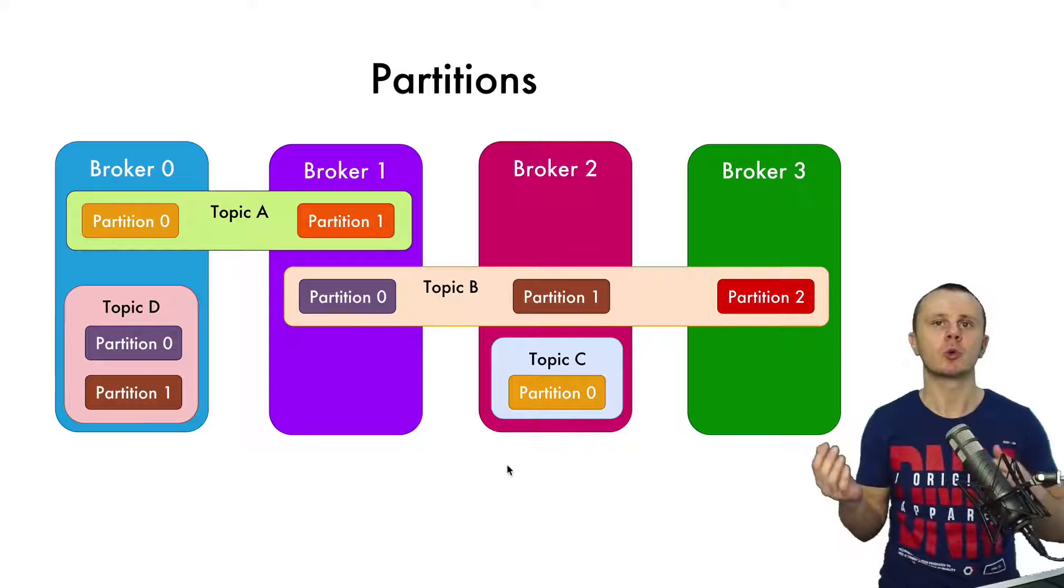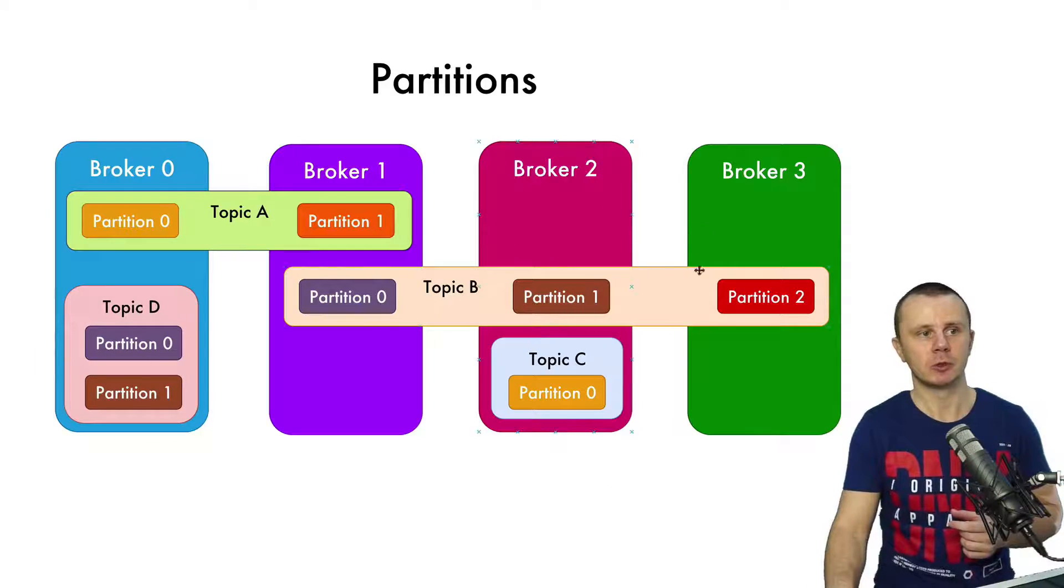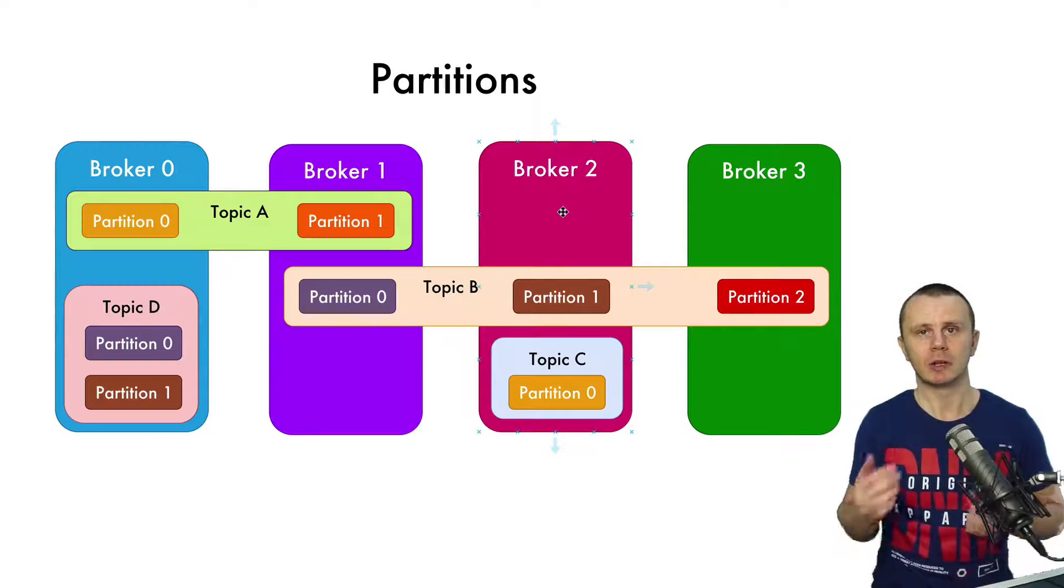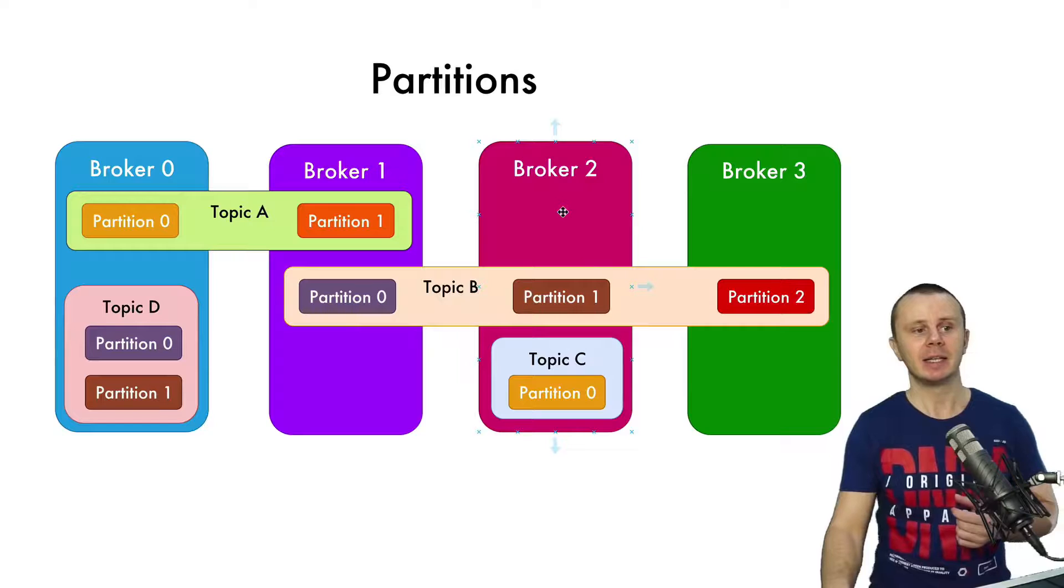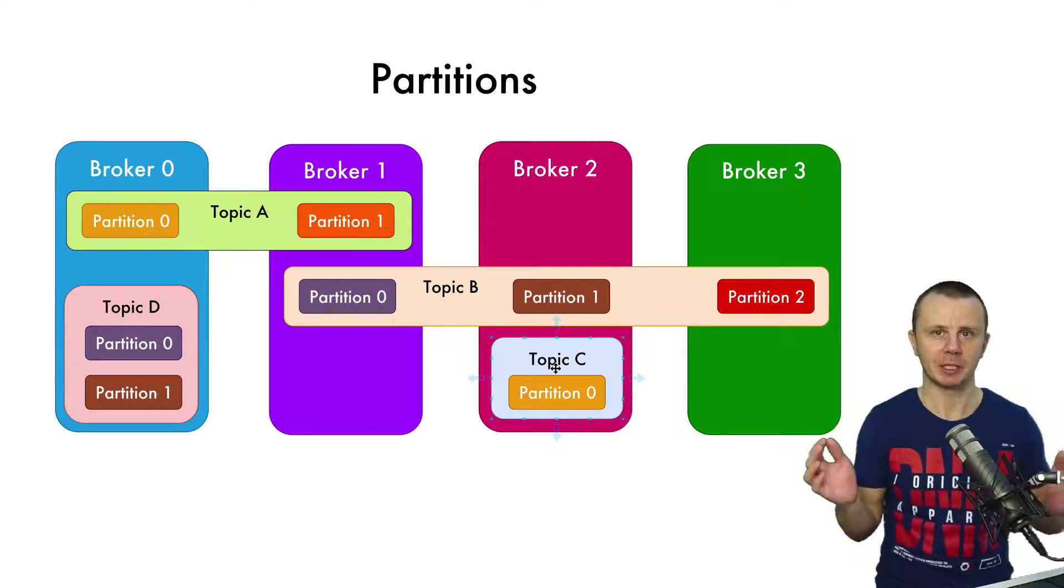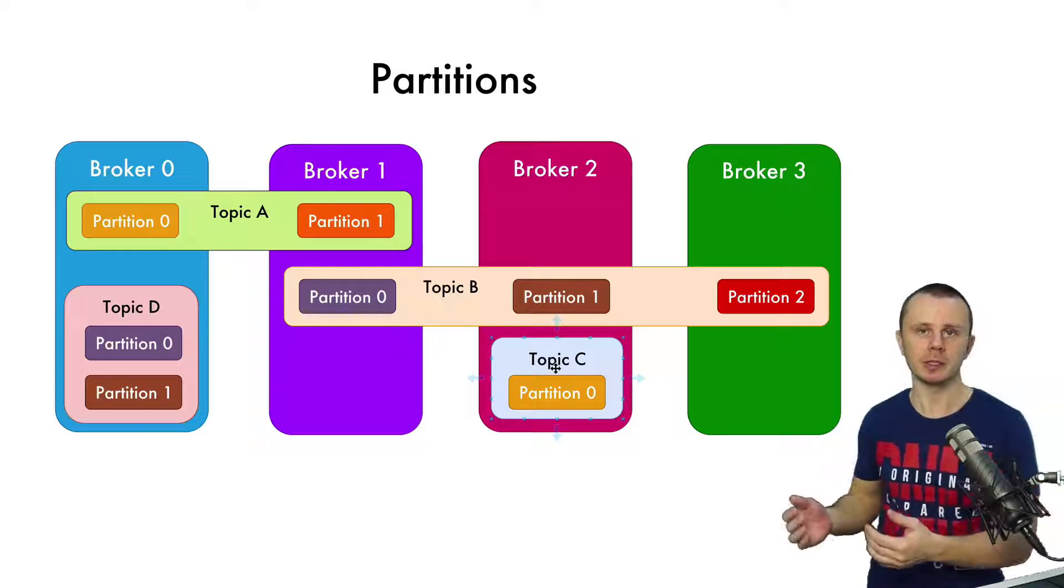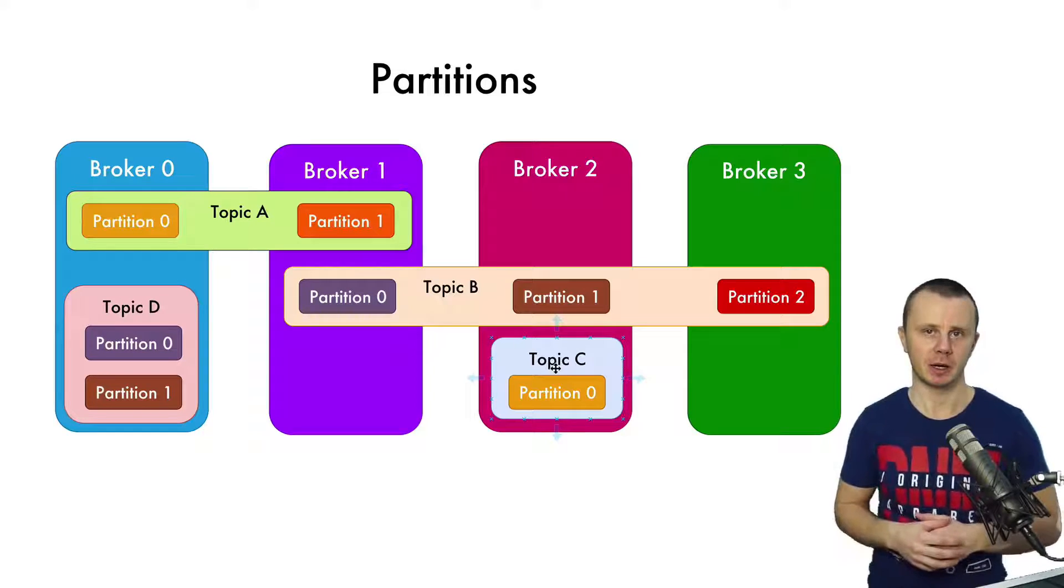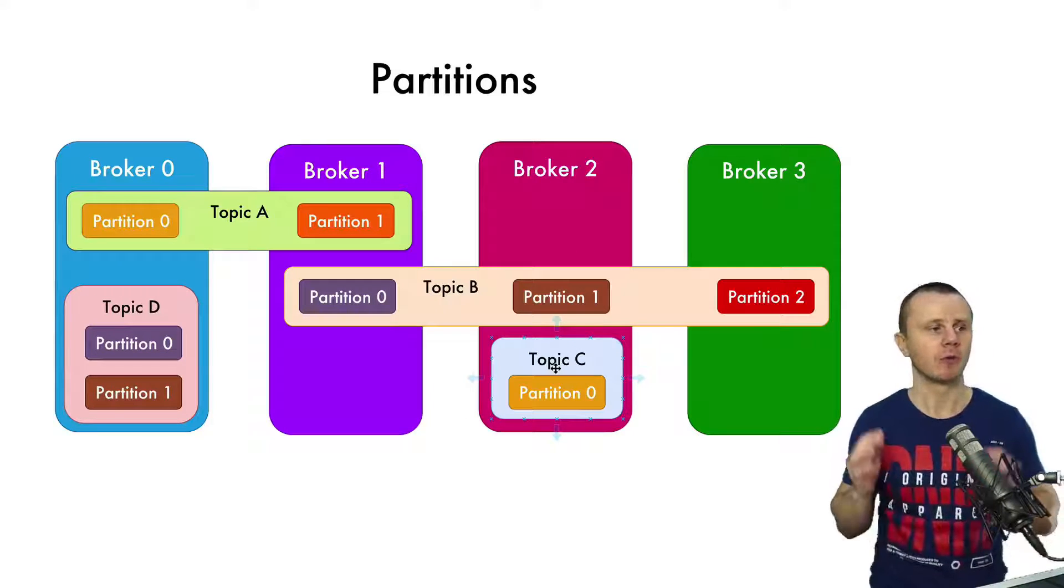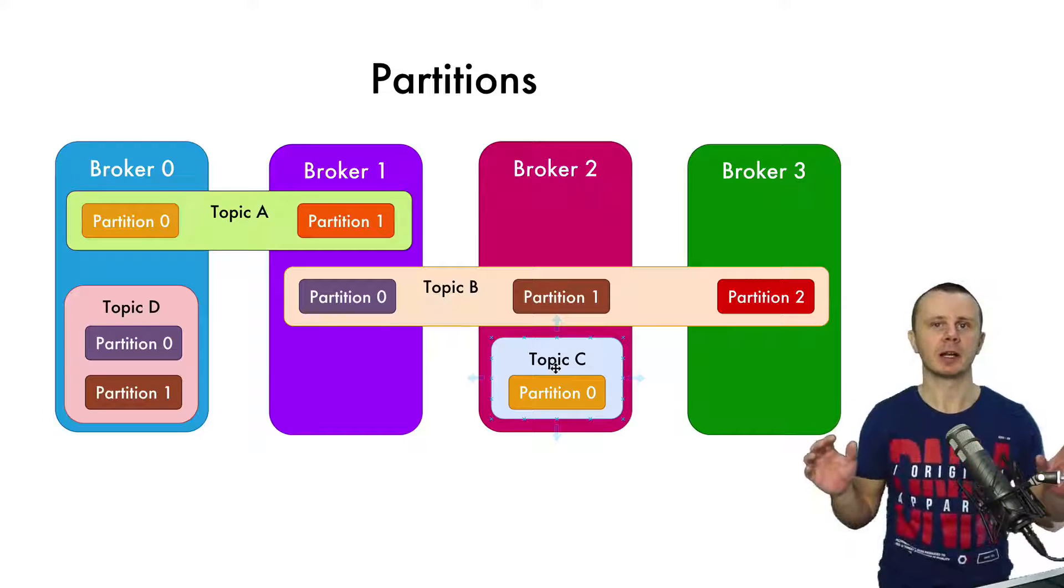The same relates to read operations. If there are many consumers, and if for example 1000 consumers will try to read data from Topic C partition 0, this broker may simply go down due to lack of resources. But if this topic has hundreds of partitions spread among different brokers, the job of supplying data to consumers will be much easier. That is the reason for creation of different partitions on different brokers.